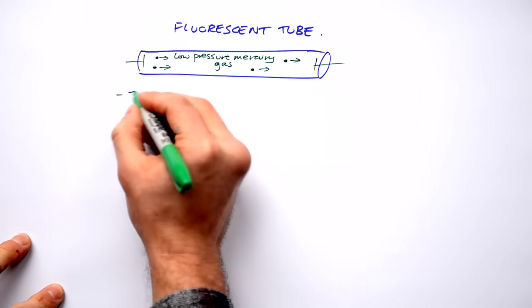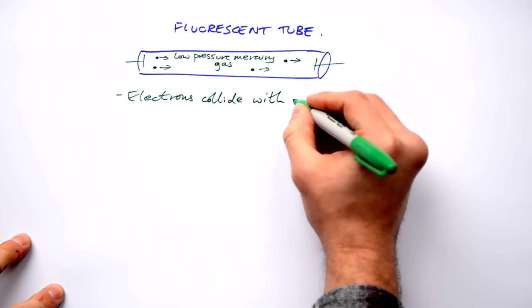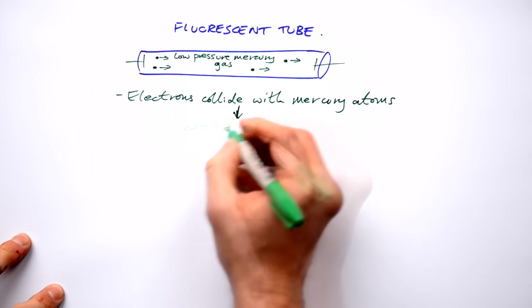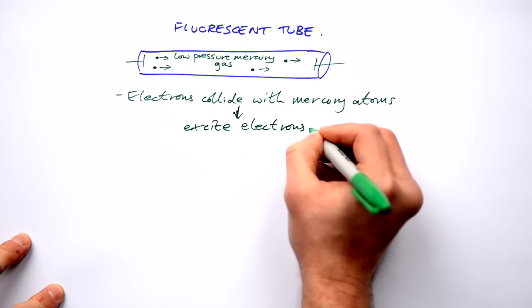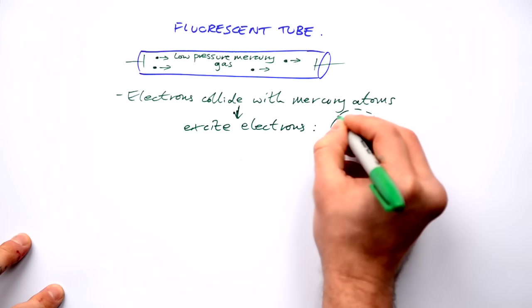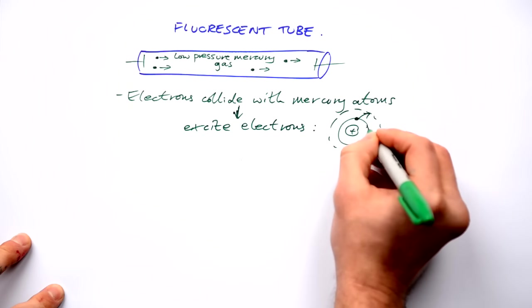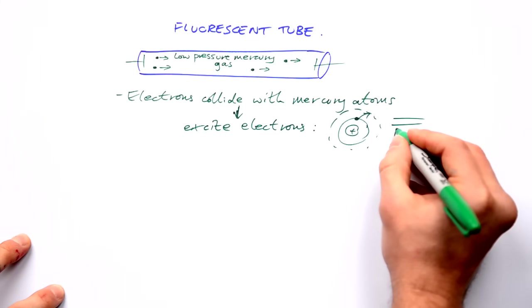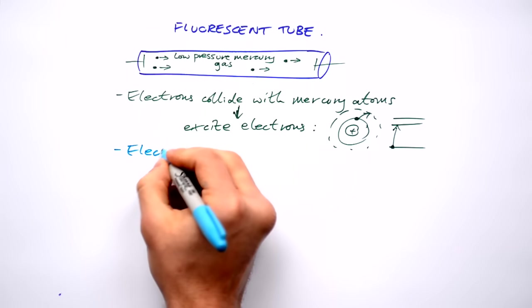The electrons collide with the mercury atoms and they excite the electrons like we saw earlier. Or we could draw it like this. The electrons de-excite.